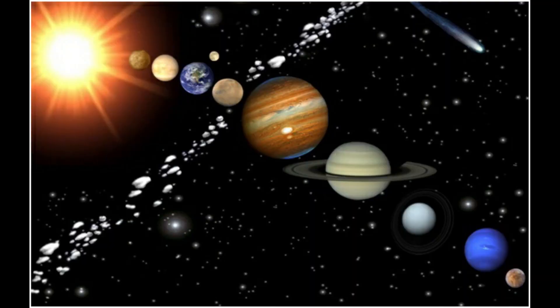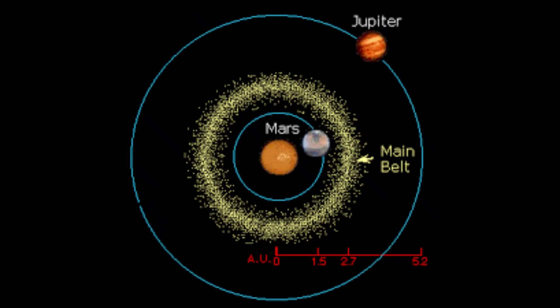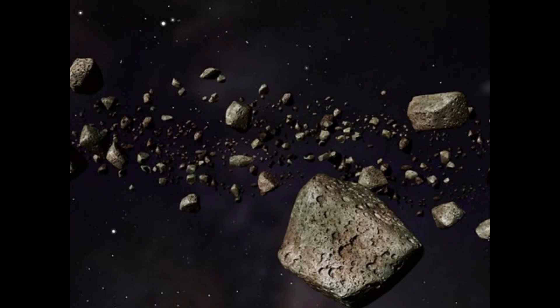Asteroids are in the solar system, between the fourth and fifth planets — that is Mars and Jupiter. In this region, there are over 1.1 to 1.9 million asteroids.